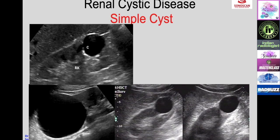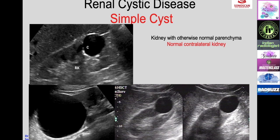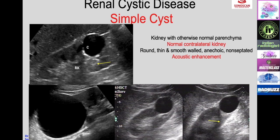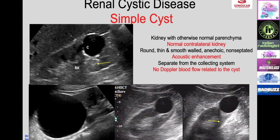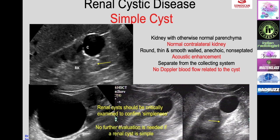Coming to the various conditions, first is the simple cyst. The kidney otherwise has normal parenchyma. The cyst appears as a round, thin, smooth-walled, echo-poor or anechoic lesion with no septations, acoustic enhancement confirming fluid content, no connection to the collecting system, and no color Doppler flow. Renal cysts must be critically examined to confirm simplicity—it is a diagnosis of exclusion. No further evaluation is needed if a renal cyst is confirmed simple.